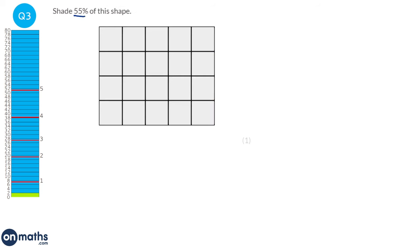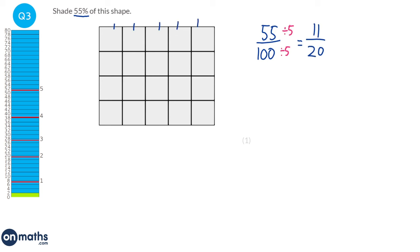55% is the same as 55 over 100. We can divide the top and bottom of the fraction by 5, so that equals 11 over 20. In total there are 20 squares — 5 across and 4 down. 5 times 4 is 20, and if we're looking to shade 11 twentieths, that's just going to be 11 squares.